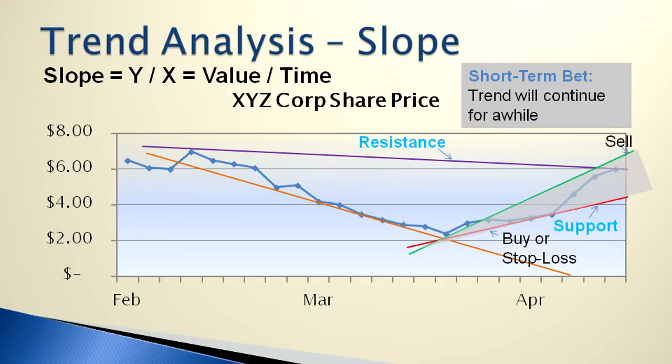This shaded area between those two trend lines is kind of a projection going forward of what the likely prices are going to be. So this is really just the whole point of technical analysis — regardless of where you are on this timeline, you're trying to figure out where the line is likely to go.